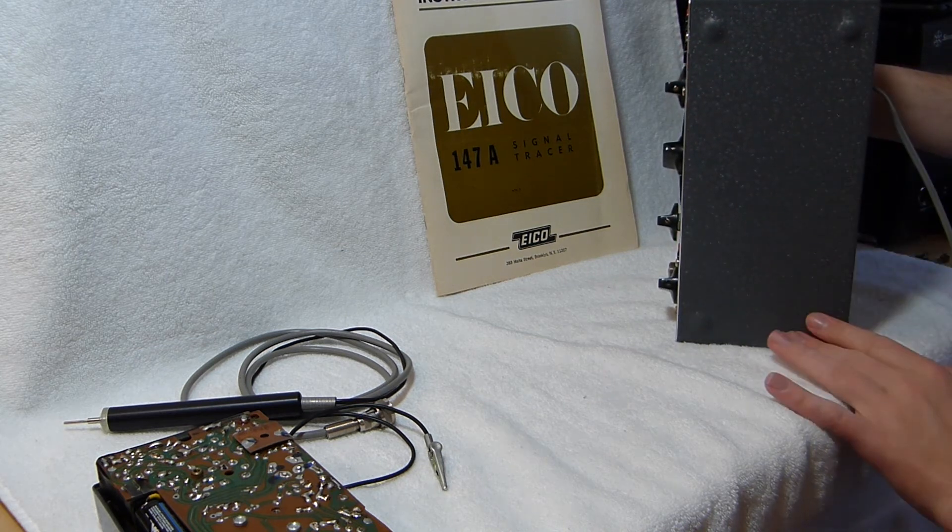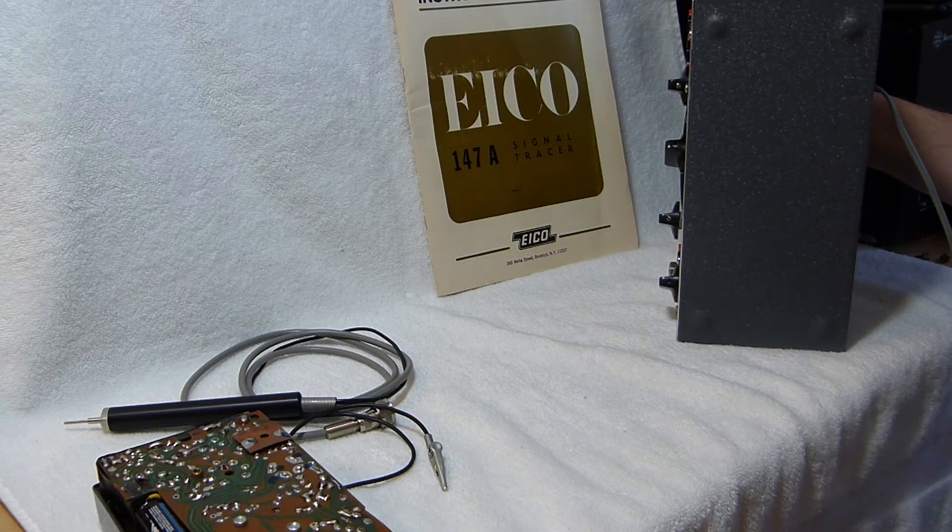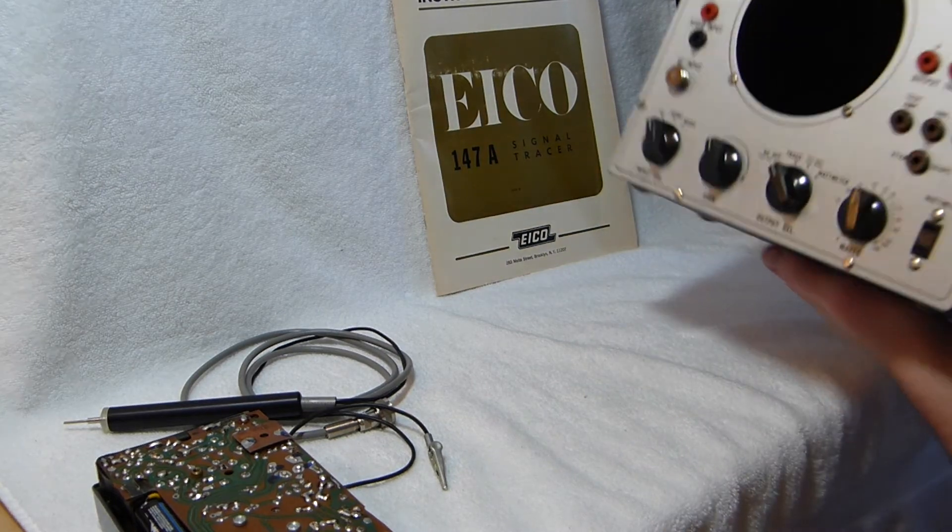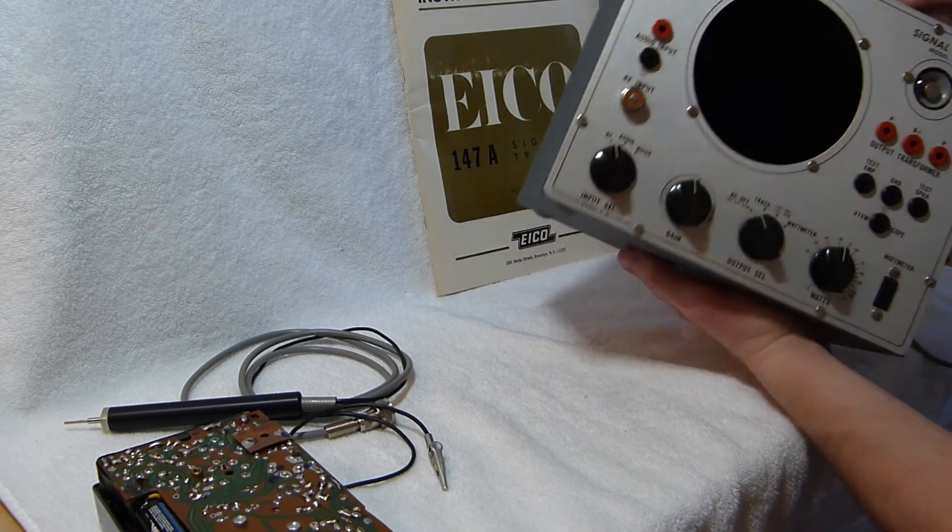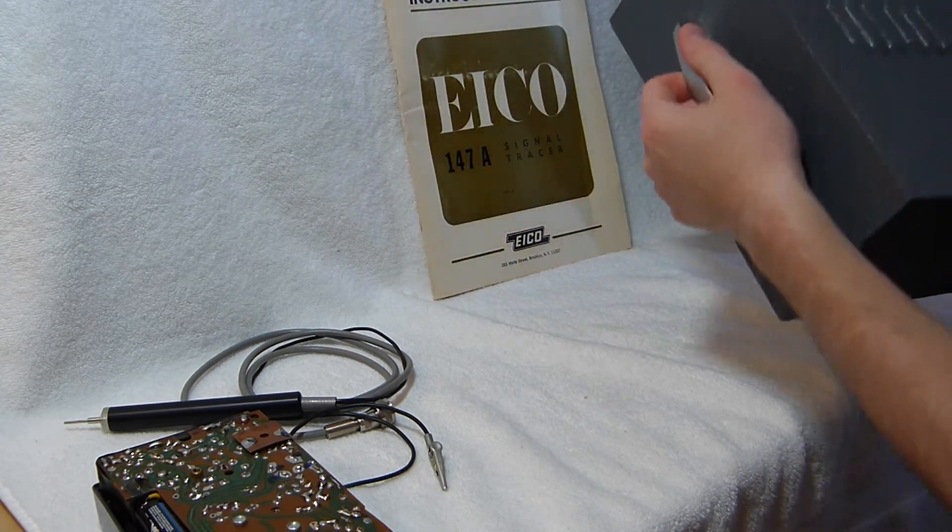The earlier example I have has rubber feet on the bottom. This one, as you can see, just has bumps on the bottom. The paint is still intact on them.